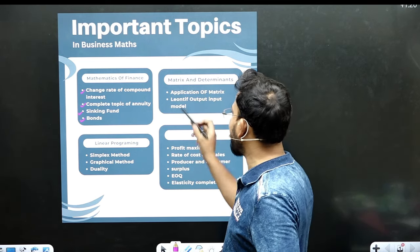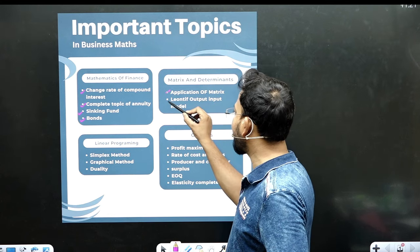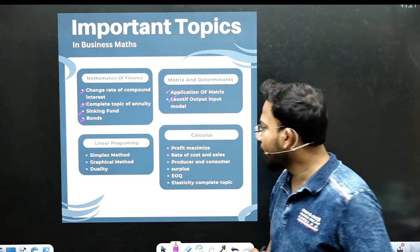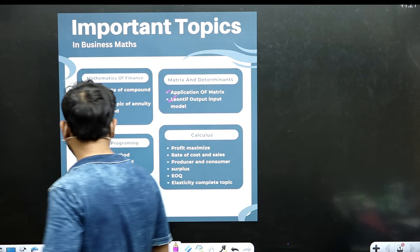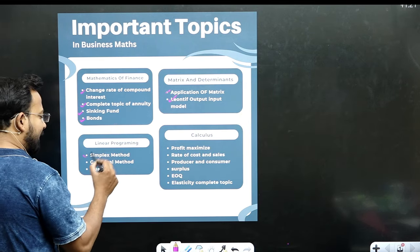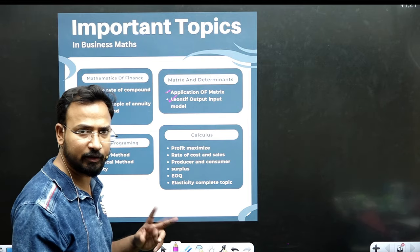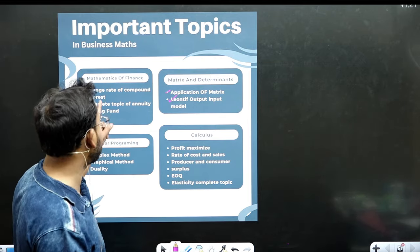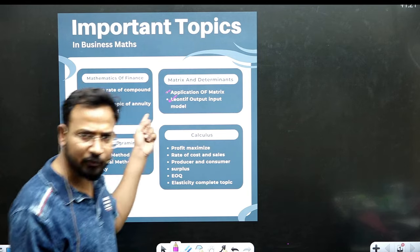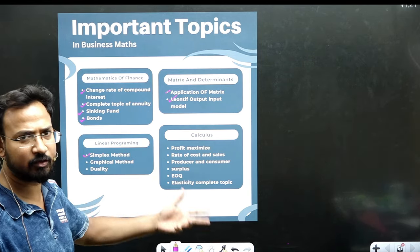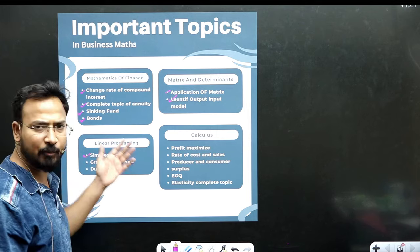In Mathematics and Determinants, there will be the first question of the application of the matrix. In optional, there will be the Leontief input-output model. There will be two questions on the paper. One question is Mathematics and Finance, and Mathematics and Determinants. This option is matrix and determinants, linear programming, option is linear programming.